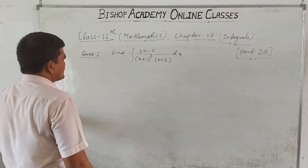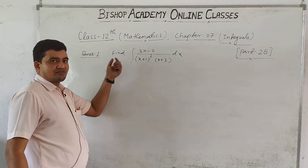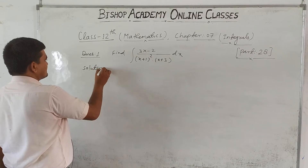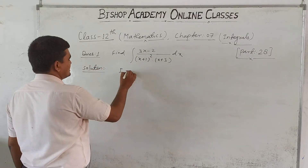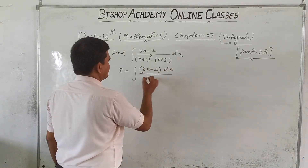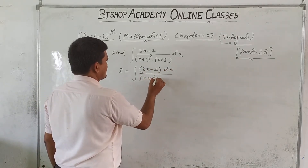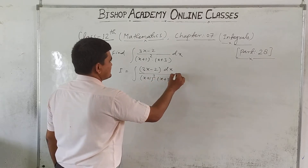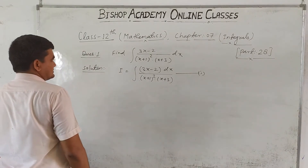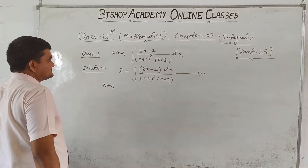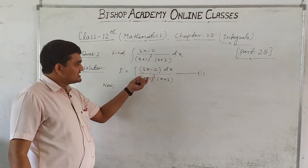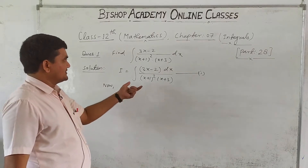We have to solve this question using partial fractions. Solution: I is equal to integration of (3x - 2) dx upon (x+1)² into (x+3). The degree of the numerator is less than the degree of the denominator.